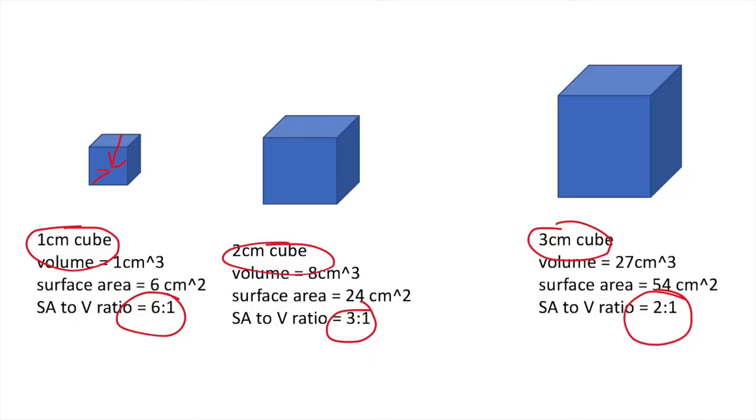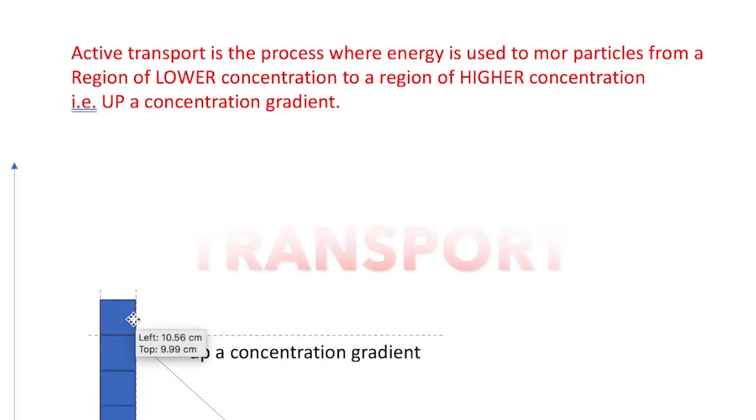Just a simple understanding of surface area to volume ratio. Cells are small because they need to have efficient material exchange with its surroundings and react quickly so that it is able to survive.